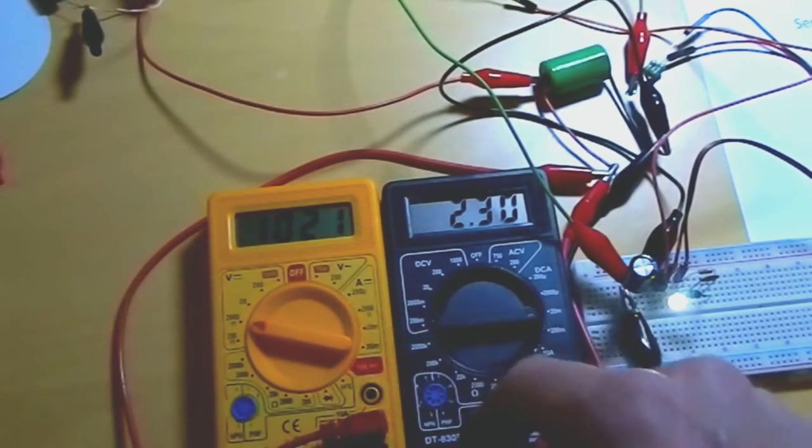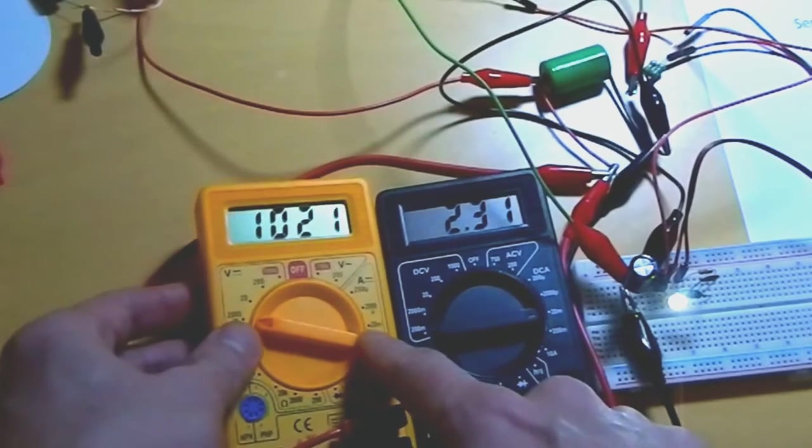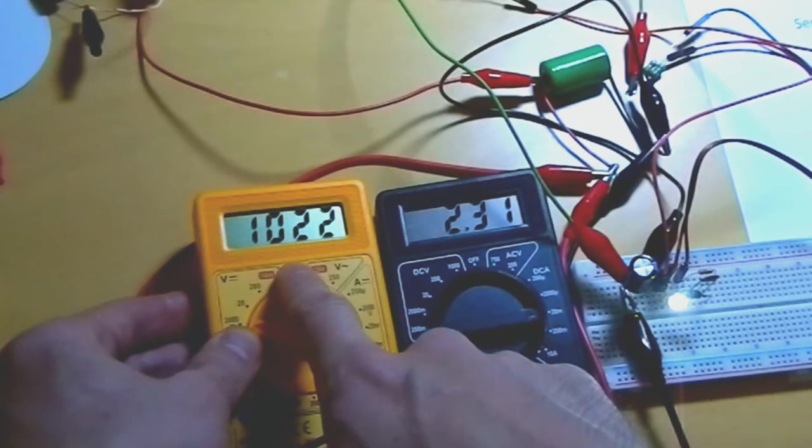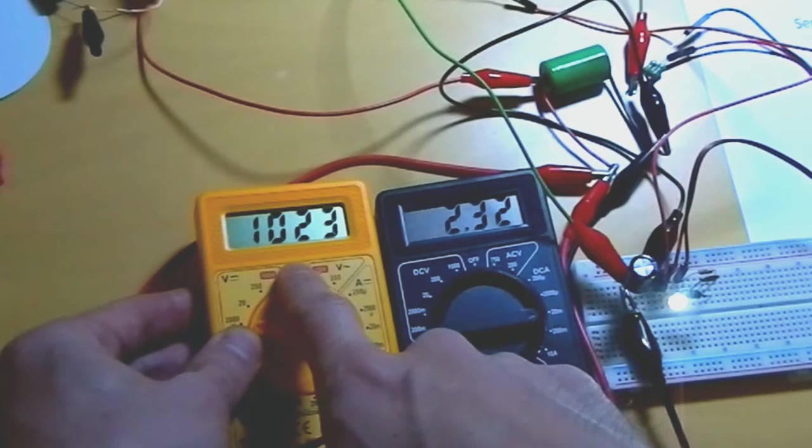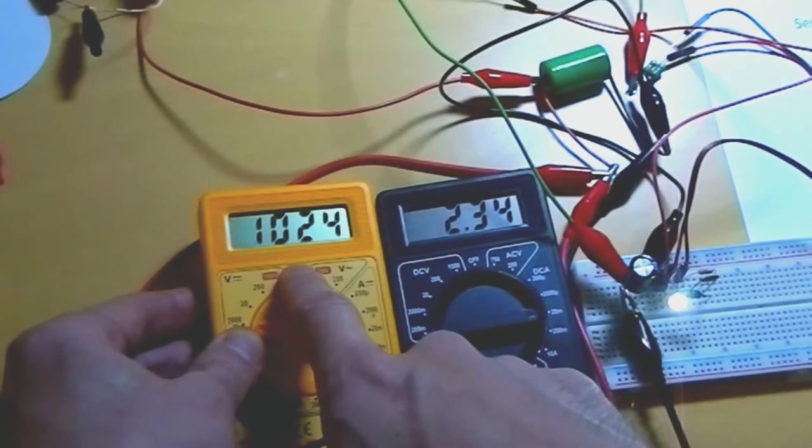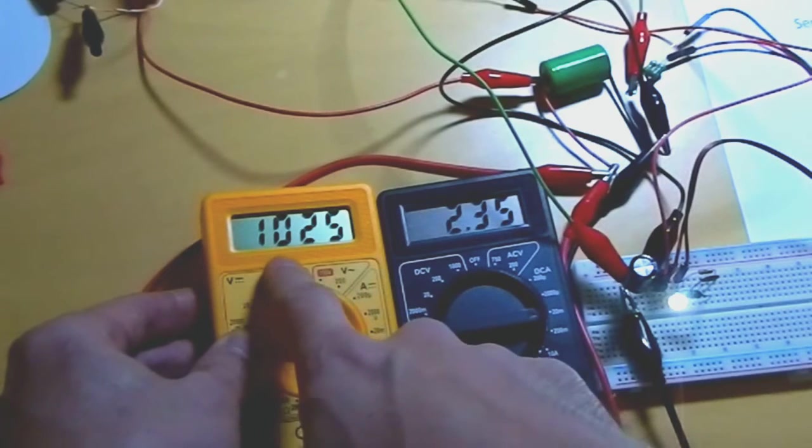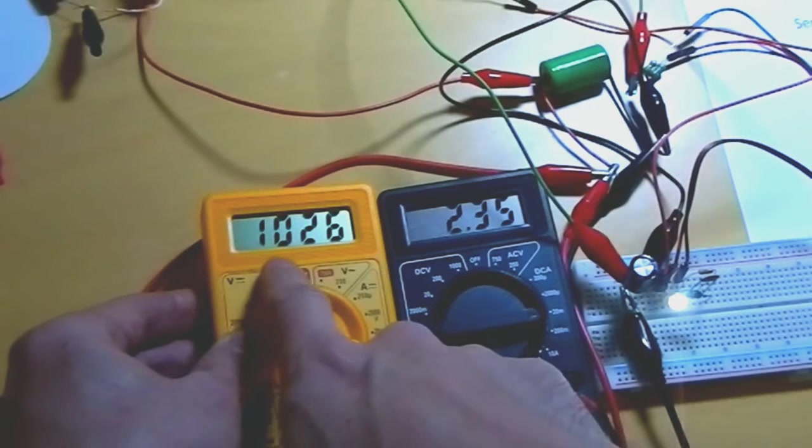And look what happens to the voltage on the battery. 22, 23, 24. And it keeps increasing until it reaches 1.1. It got up to 1.160.